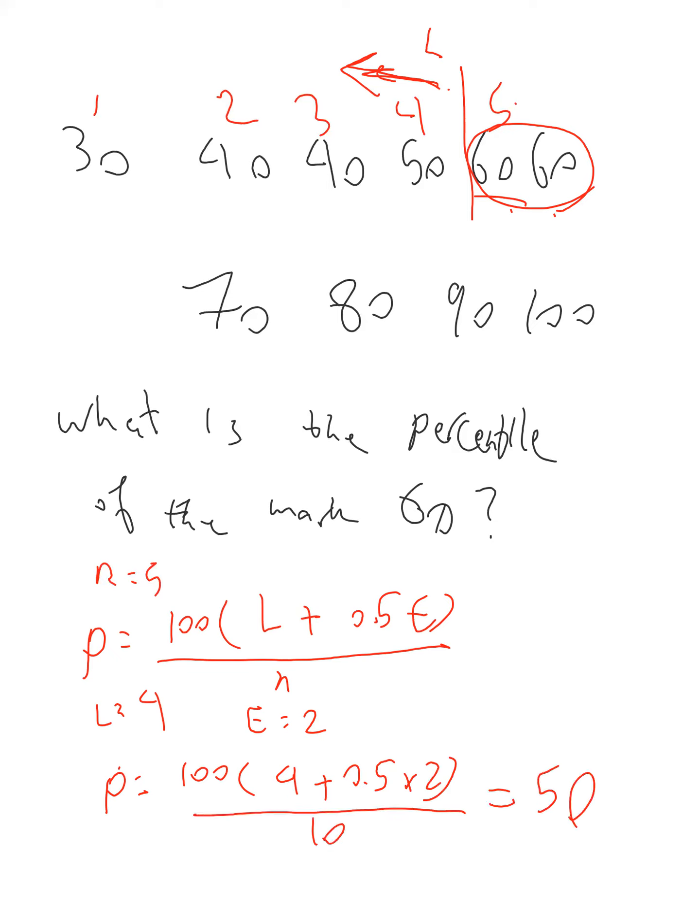So what does it mean? It means that this mark 60 is the 50th percentile, which means 50% of the data are below 60. So this number says 50% of the data is less than the 60. This is the meaning of percentile.